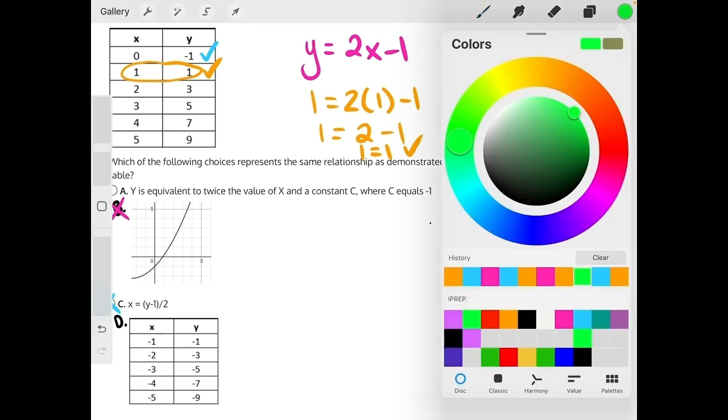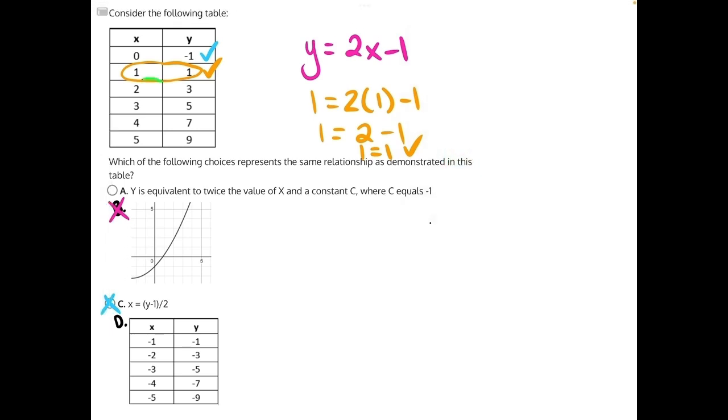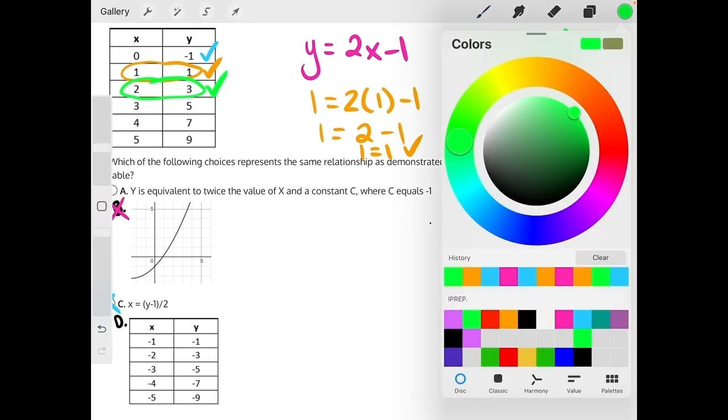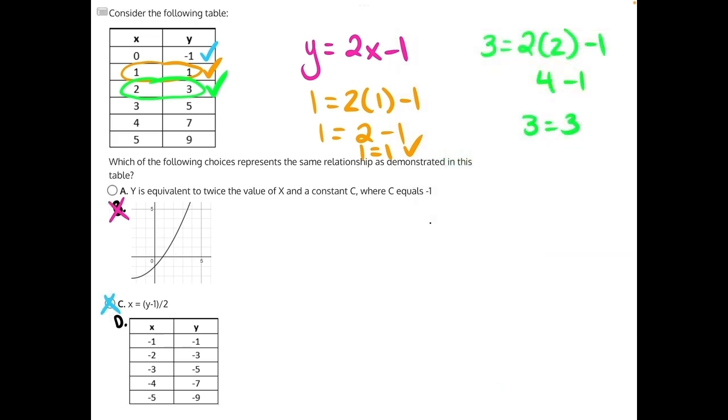Let's do another one. 2 and 3. So we will have 3 is equal to 2 times 2 minus 1. 2 times 2 is 4 minus 1 is equal to 3. And for the rest of these, you can kind of see the pattern. We can almost do this in our head the rest of the way.